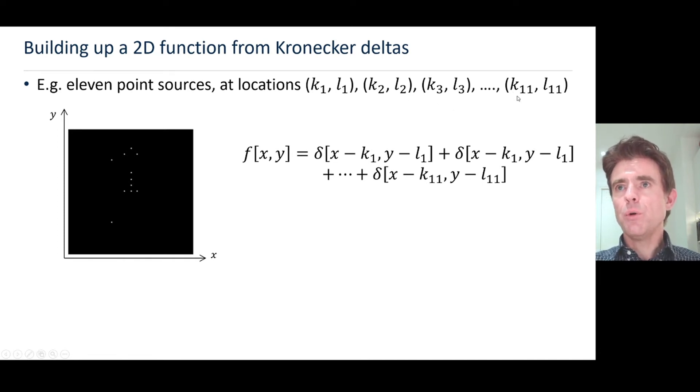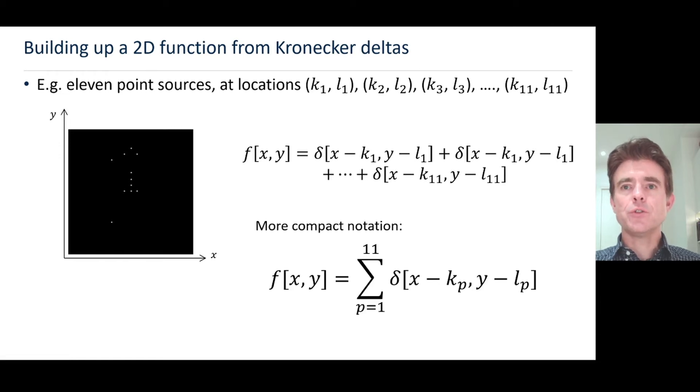We just add together delta function shifted to each of those coordinates. It's a very obvious expression, so I haven't written out all 11 delta functions.